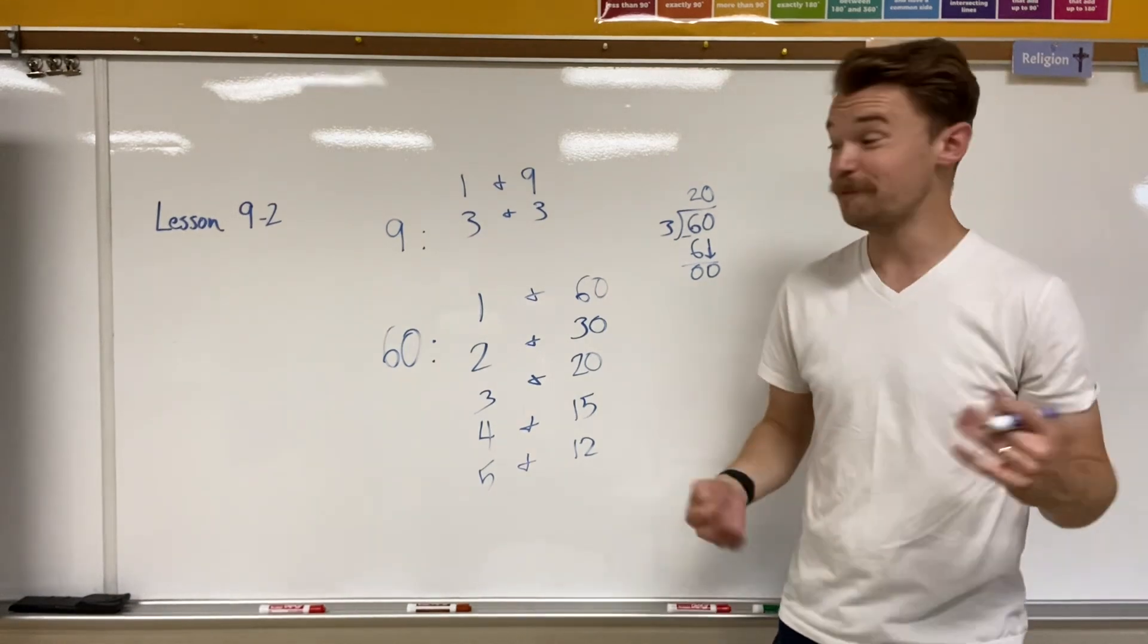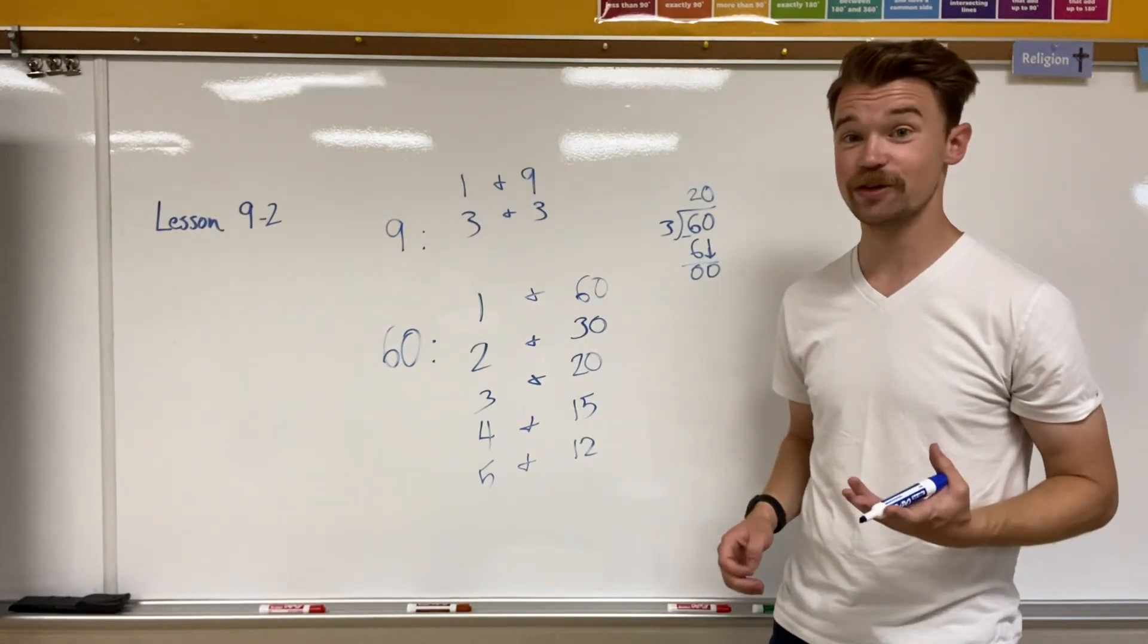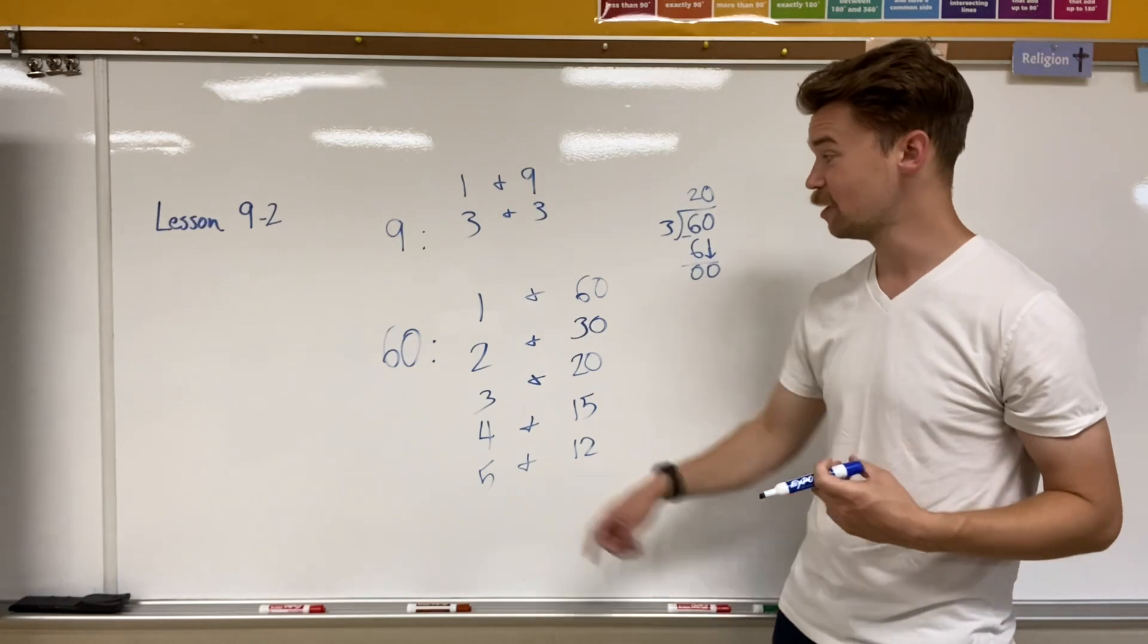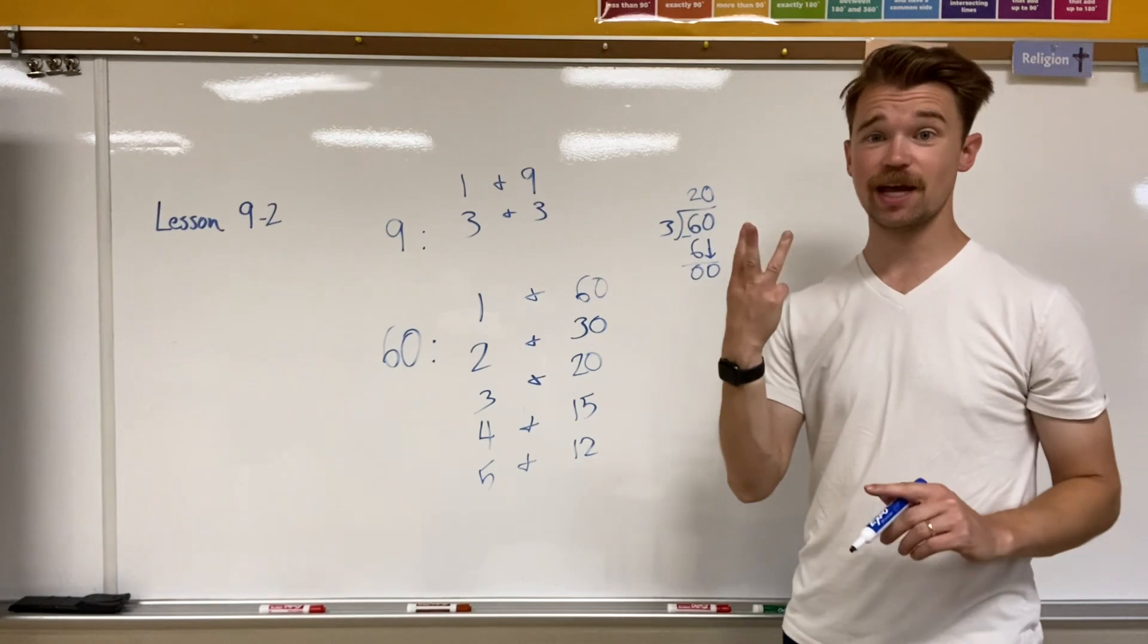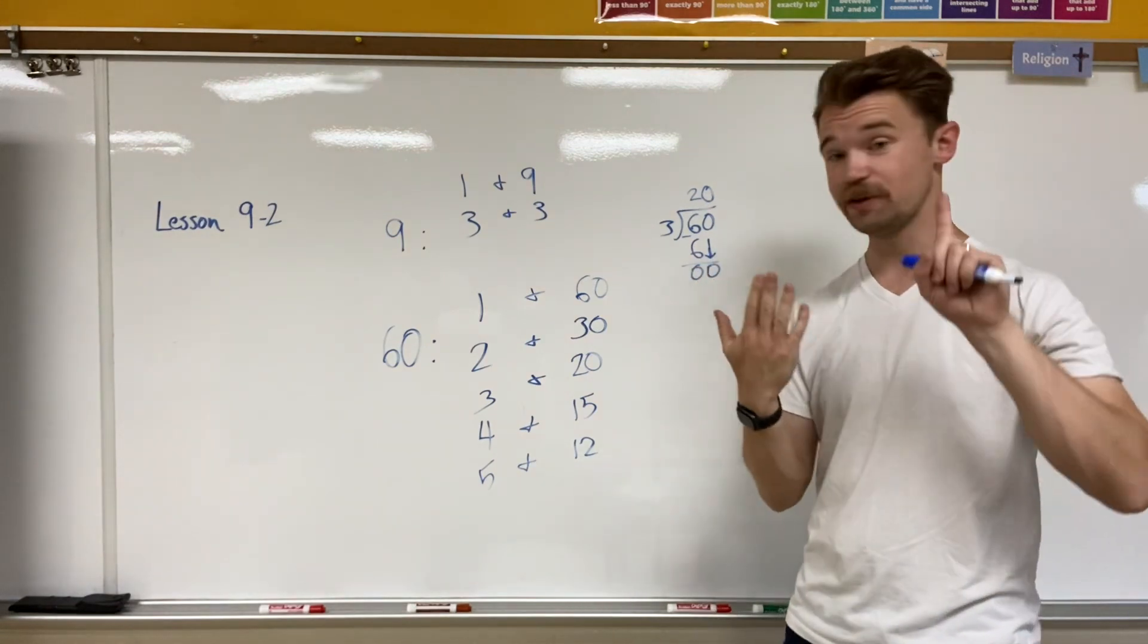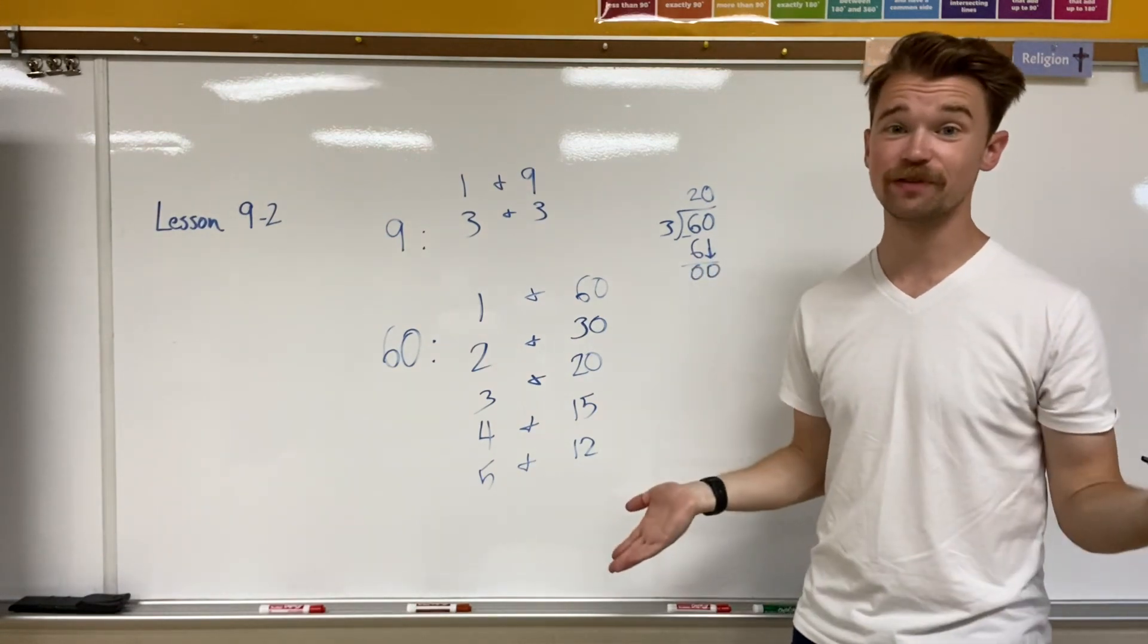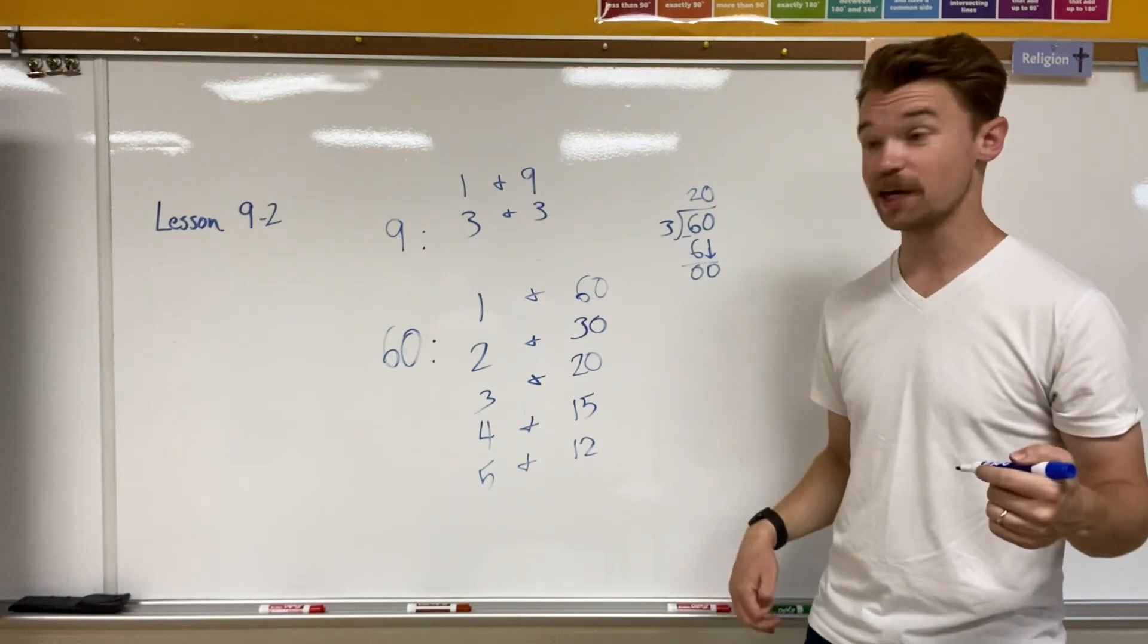And fourth grade friends, I made a mistake. I didn't double check to make sure that I was completely done with my factor pairs. I had one, two, three, four, five. I didn't check six, seven, eight, nine, 10, 11, or 12. I didn't check seven different numbers. And I missed one factor pair.